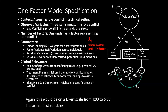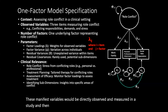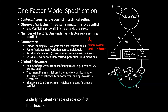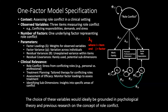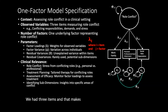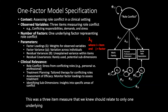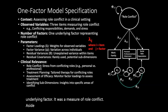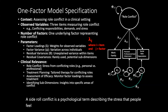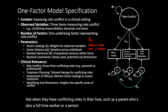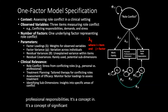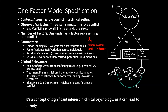The last item could be social role expectation conflict, with the statement: 'I often feel pressured to act differently in various social roles — for instance, as a parent, a friend, or an employee — and it causes me stress,' again on a Likert scale from one to five. These manifest variables would be directly observed and measured in a study, and the responses to these items would be used to understand the underlying latent variable of role conflict. The choice of these variables would ideally be grounded in psychological theory and previous research on the concept of role conflict. Role conflict is a psychological term describing the stress people feel when they have conflicting roles in their lives, such as a parent who is also a full-time worker, and it can lead to anxiety, depression, and other mental health issues.